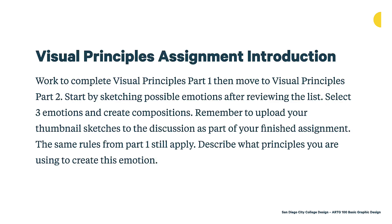That gets us to the Visual Principles Part 2 assignment. You're going to complete Visual Principles Part 1, then move on to Part 2, which is what this lecture was about. You're going to start by sketching possible emotions after reviewing the list. You'll select three emotions from that list and work to create compositions. You need to upload your thumbnail sketches to the discussion, and those will ultimately be part of your finished assignment. All the same rules still apply from Part 1. You can choose what shapes you want to work with — one point, one line, or one plane — but certain shape groups might lend themselves better to your ideas.